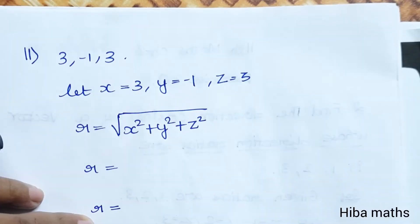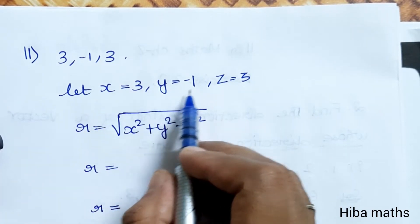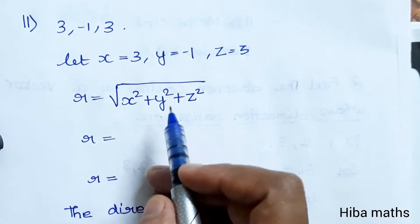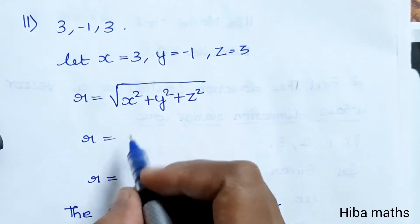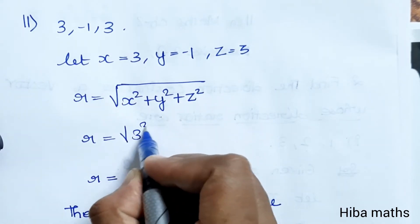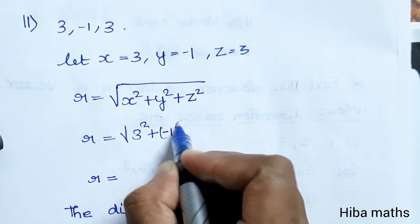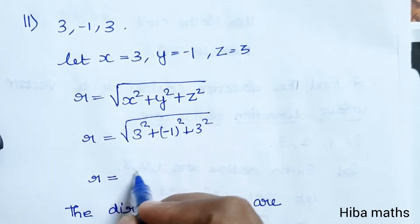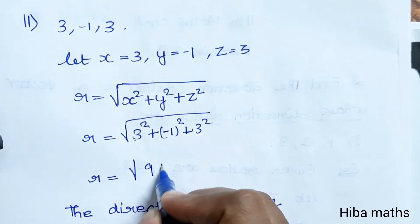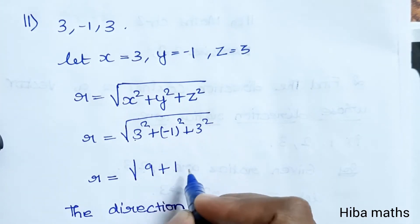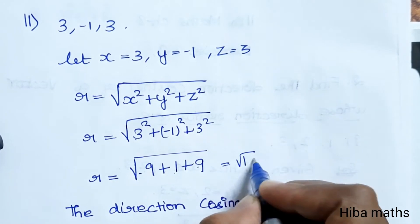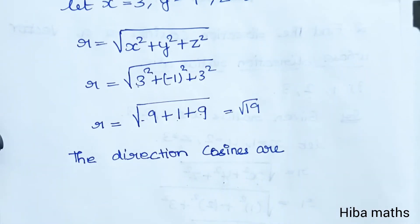Now the second subdivision: direction ratios are 3, minus 1, 3. R is equal to root of X square plus Y square plus Z square. So R equals root of 3 square plus (minus 1) square plus 3 square, which is root of 9 plus 1 plus 9, that is root of 19.